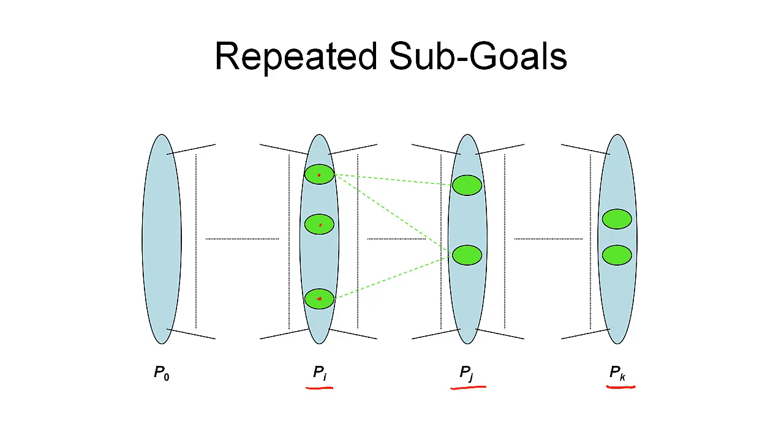But since we have seen this combination of sub-goals in this layer before and it was previously not achievable in the planning graph, we know that it still can't be achievable. So we don't need to do the search again.